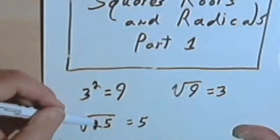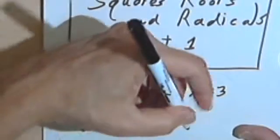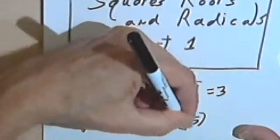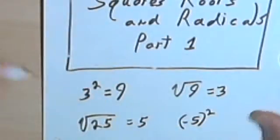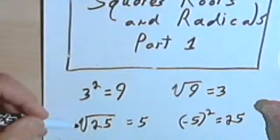If you think about it, you might ask, well, why isn't it negative 5? After all, negative 5 squared also equals 25. Well, the reason is this.